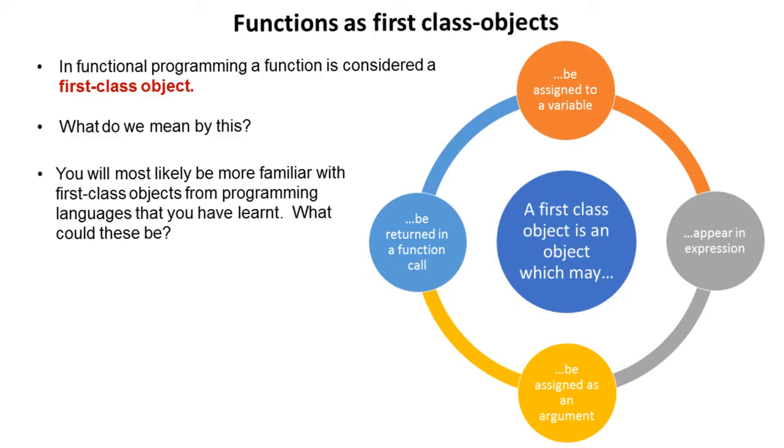It's also important to note that in functional programming, functions are considered first-class objects. What do we mean by first-class object? You're going to be very familiar with first-class objects from programming languages that you've learned. Let's look at what defines a first-class object and see if you can work out what we mean.